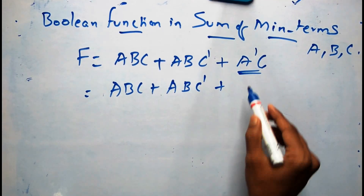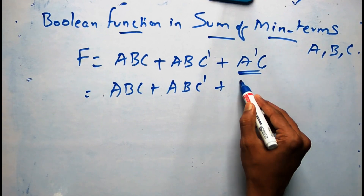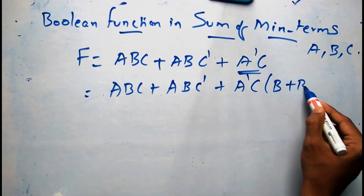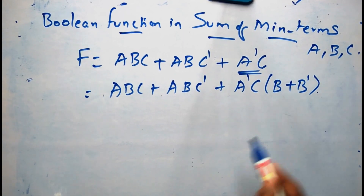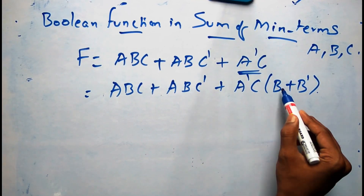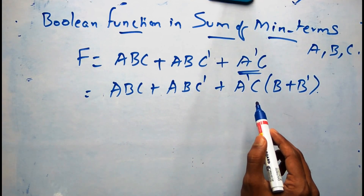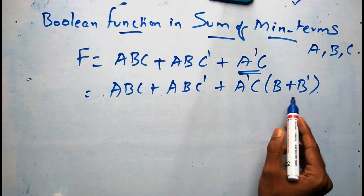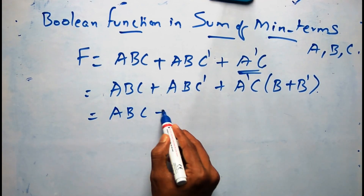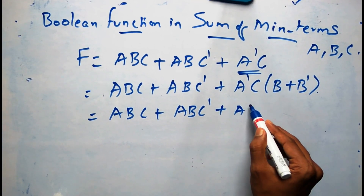But coming to the third term, we are having the missing variable b. What we will do is represent something like this: b plus b'. So we can write the term a'c as a'c dot (b plus b'). Please refer to the identities of boolean algebra in my previous lecture.